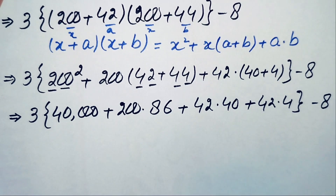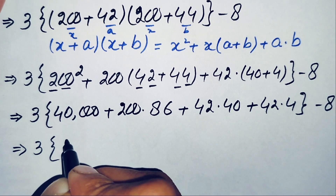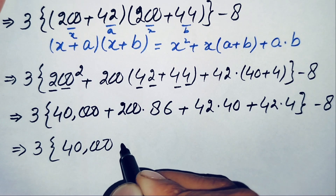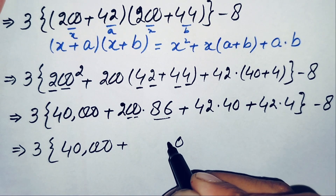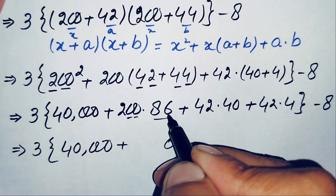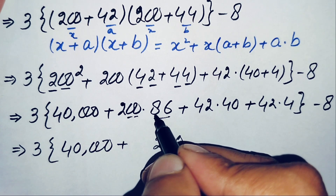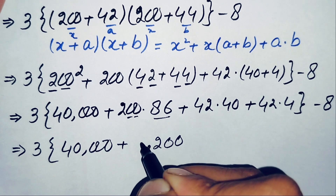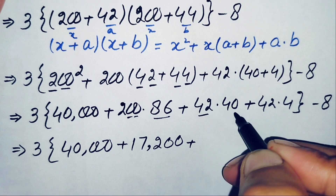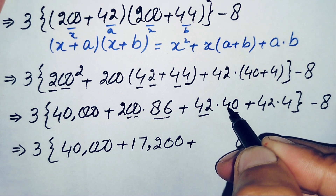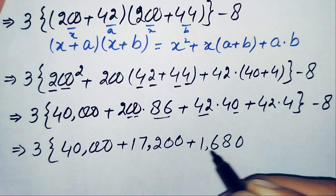Now let's simplify these numbers. 200² = 40,000. Then 200×86: 86×2=172 so this gives 17,200. Then 42×4=168. So inside the braces we have 40,000 + 17,200 + 168 minus 8.